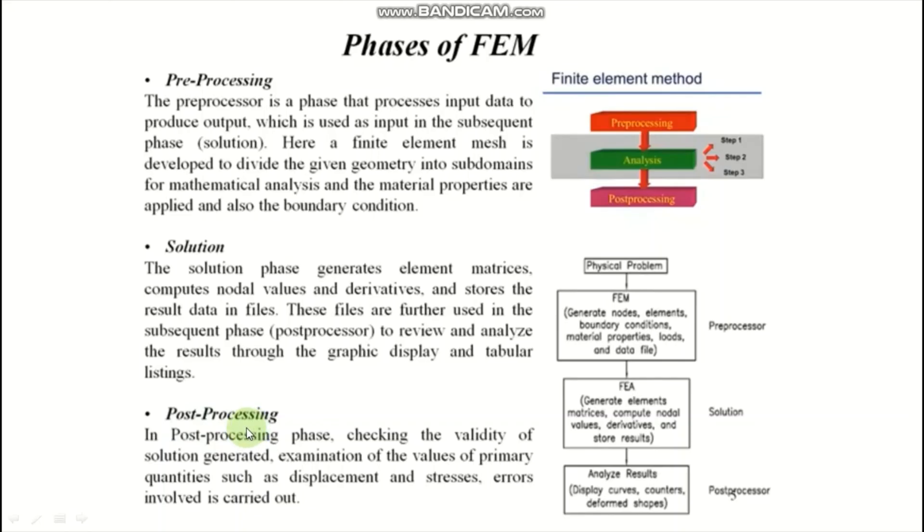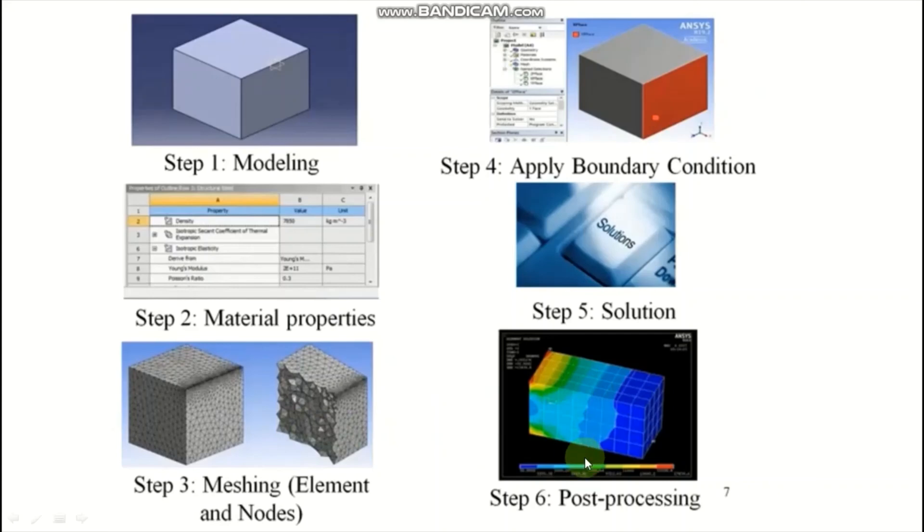Third phase is post-processing, nothing but interpretation of result. In which form you require the result? That means contour plot, shown in colored shape. You can see in this step 6, color portion indicates where maximum stress and that blue color indicates minimum stress induced in the body or you can say minimum deformation or maximum deformation induced in the body.